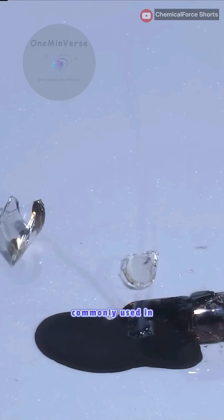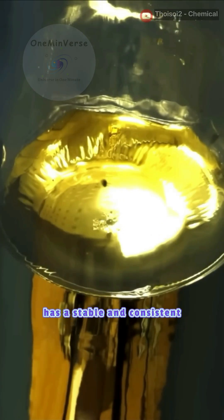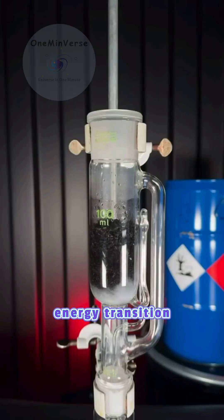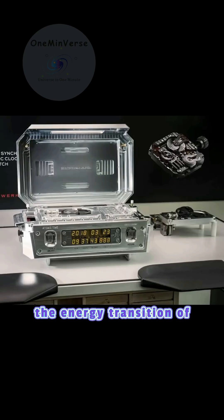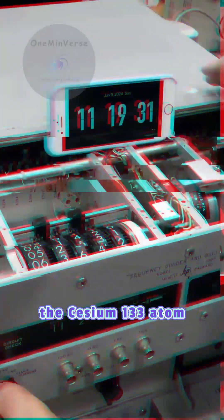Cesium itself is commonly used in atomic clocks. This is because cesium has a stable and consistent energy transition when exposed to electromagnetic waves. And one second is defined based on the energy transition of the cesium-133 atom.